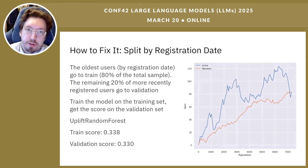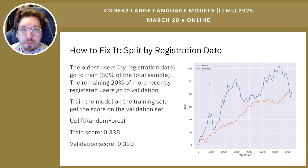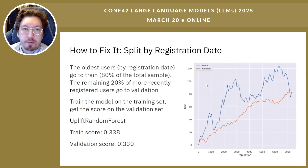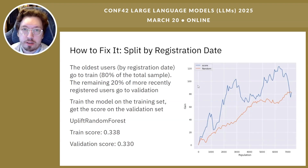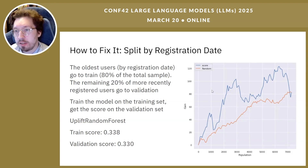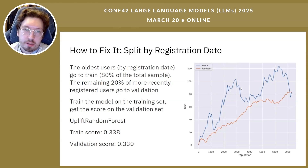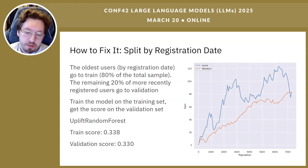Looking at the graph, however, users spread across a few distinct peaks. You can't isolate the most promising users with just one threshold. There are three spikes, so we tried another approach. Unfortunately, we can't simply use a threshold.